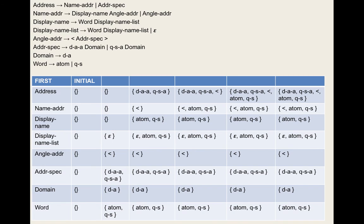We check the token against the first sets of the production rules. We've already proven there's no intersection, so we can tell exactly which rule to choose based on the token we read in. If the token is not in the first set of address at all, that's a parsing error. What we're parsing must start with dot-atom-at, quoted-string-at, less-than, atom, or quoted-string.